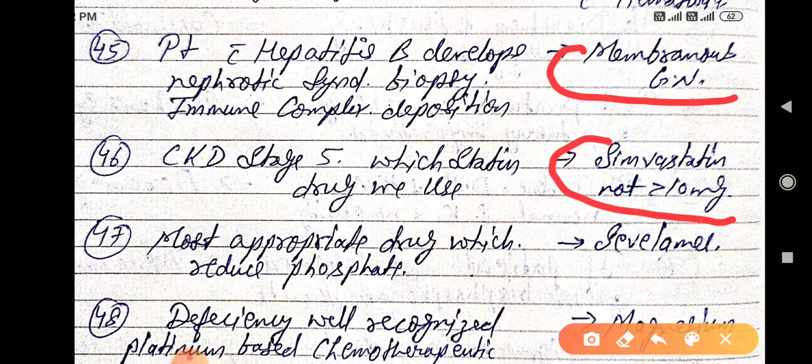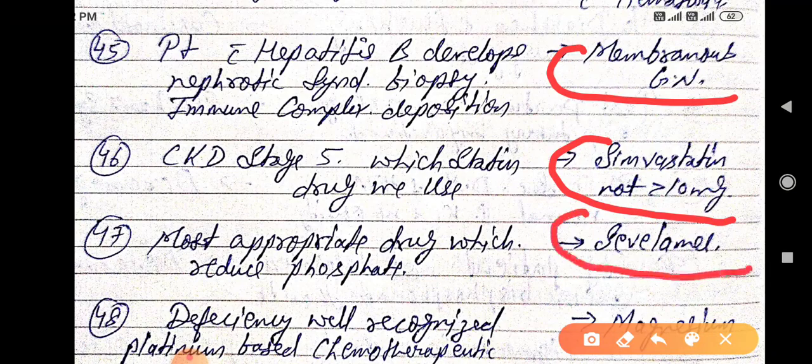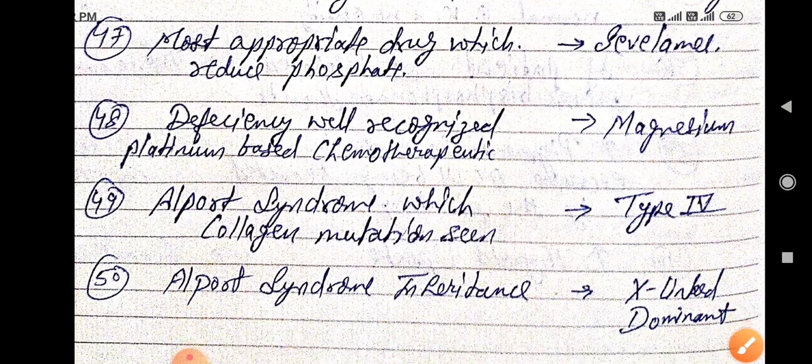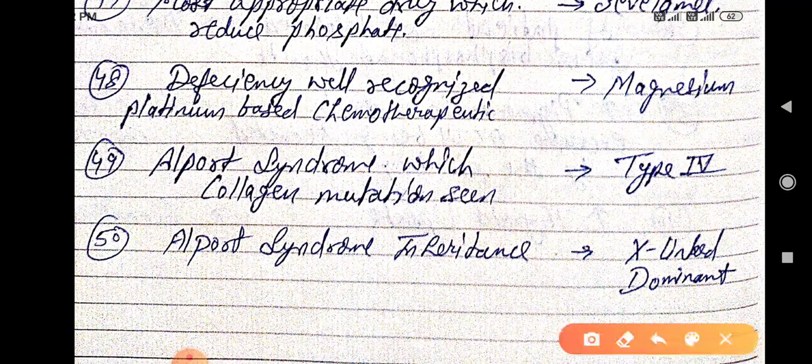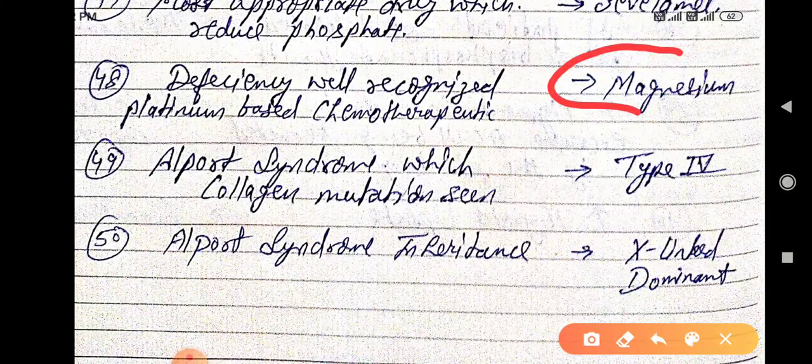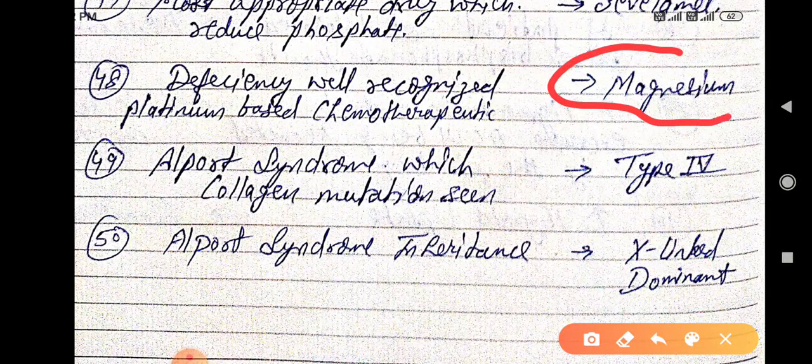Most appropriate drug which reduce phosphate, that is Sivellamal. Deficiency well recognized in platinum-based chemotherapy is magnesium, hypomagnesemia.